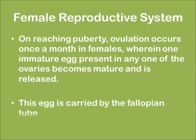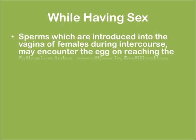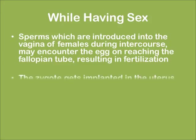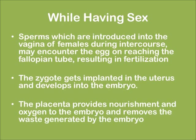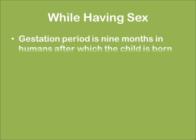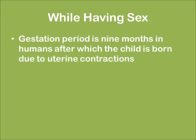The egg is carried by the fallopian tube. Sperms introduced into the vagina during intercourse may encounter the egg on reaching the fallopian tube, resulting in fertilization. The zygote gets implanted in the uterus and develops into the embryo. The placenta provides nourishment and oxygen to the embryo and removes waste generated by the embryo. The gestation period is 9 months in humans, after which the child is born due to uterine contractions.